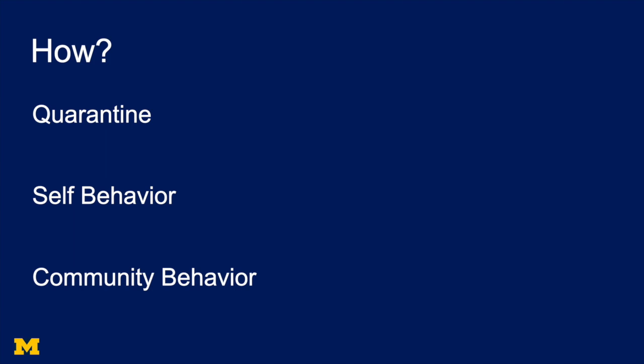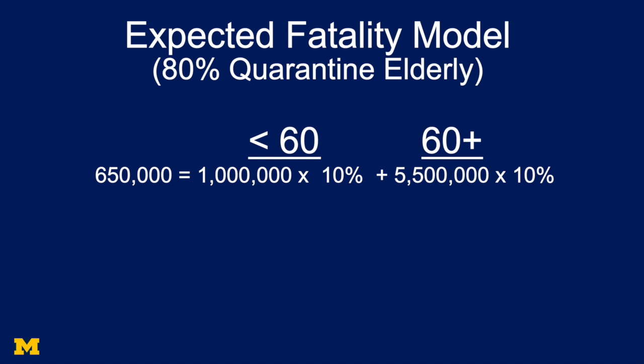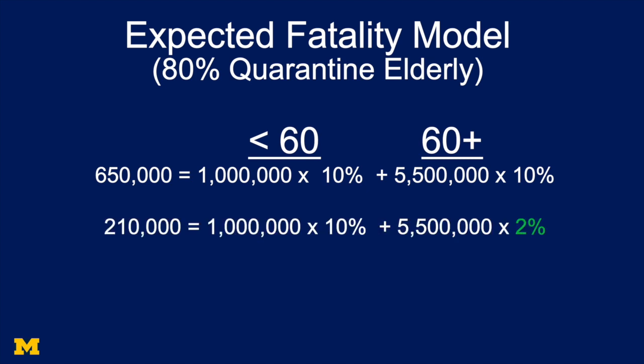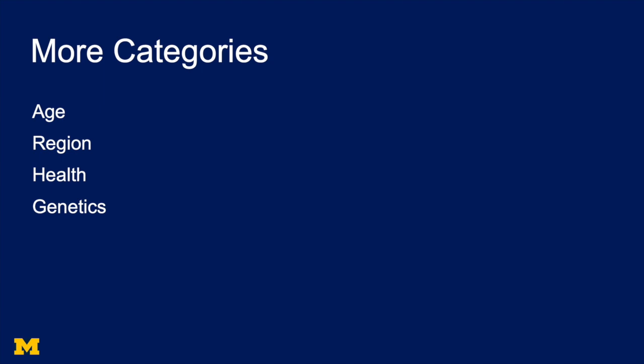How do we reduce infection in the older age group? Quarantine. Better self-behavior — people in that older age group make sure they don't get out much. We also have better community behavior, so people who interact with older people keep their social distance or only meet with them virtually. Suppose we could quarantine 80% of the elderly — instead of 10% of people older than 60 being infected, we lower it to 2%. That would drop fatalities from 650,000 down to 210,000. Breaking people up by age was a really good idea, and it begs the question: why don't we also consider region, health, and genetics to identify the most vulnerable populations?